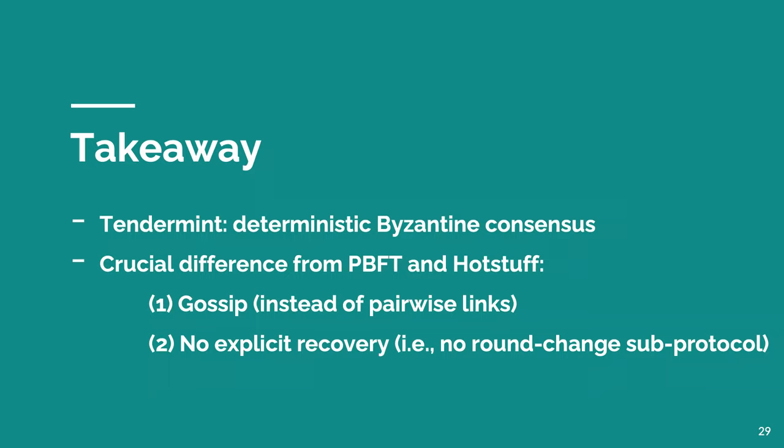In this talk, we briefly presented Tendermint, a deterministic Byzantine consensus protocol. We discussed its design choices and compared it to PBFT and HotStuff. The main difference is that Tendermint operates on top of a gossip network instead of pairwise links, which at the algorithmic level allows Tendermint not to have an explicit recovery sub-protocol that HotStuff and PBFT have. We conclude with an invitation to read our paper. Thank you all for your attention.